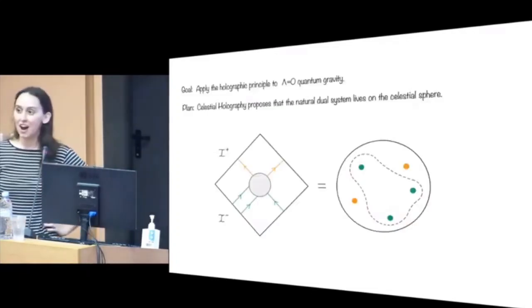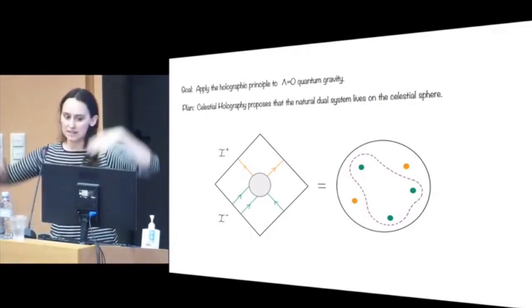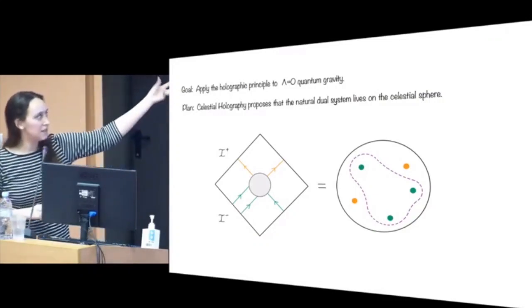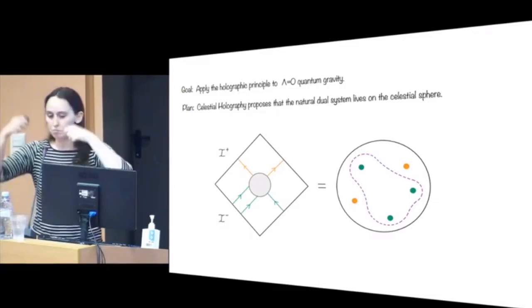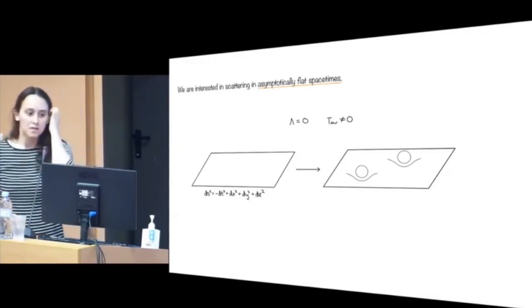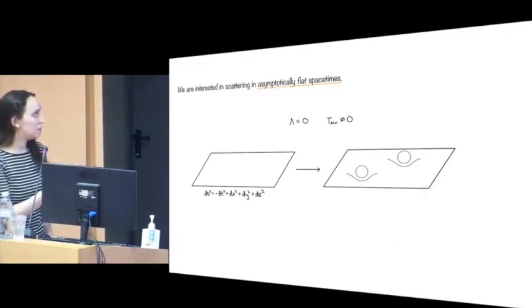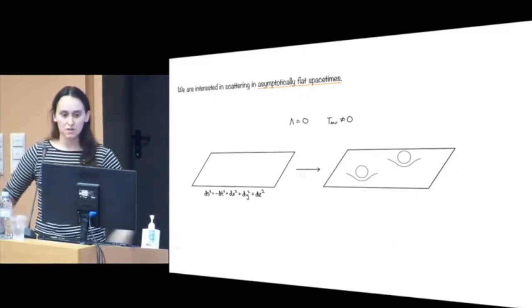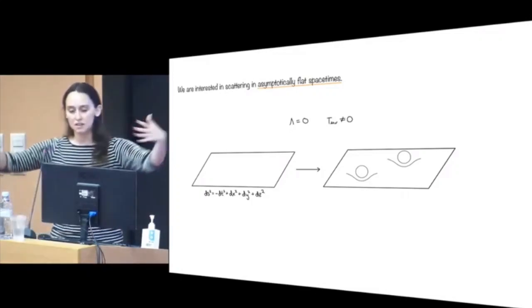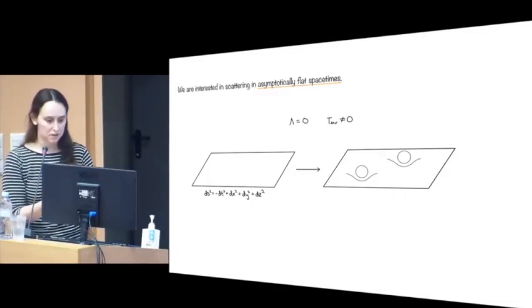So our goal is to apply the holographic principle to vanishing cosmological constant to understand quantum gravity in these asymptotically flat spacetimes. The plan is to show that the picture on the left can be mapped in a way that's useful to these punctured spheres. When I say asymptotically flat spacetimes, I mean I have zero cosmological constant but I have nontrivial matter distribution.